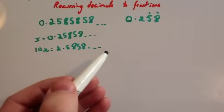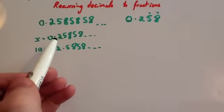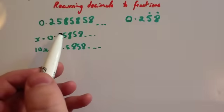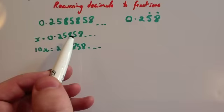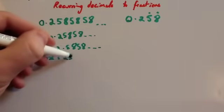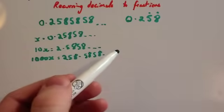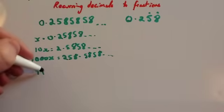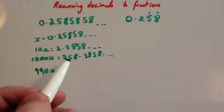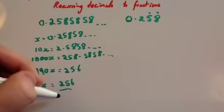Notice that the recurring part 5,8,5,8... is now after the decimal point in the 10x equation. We want another equation also with 5,8,5,8... after the decimal point. Going back to the original equation, if we times by 1000, we move three decimal places to get 1000x = 258.5858... Now we have two equations both with the recurring part after the decimal point. Subtracting 10x from 1000x gives 990x. The decimal parts cancel, and 258 minus 2 = 256. So 990x = 256, and x = 256/990.